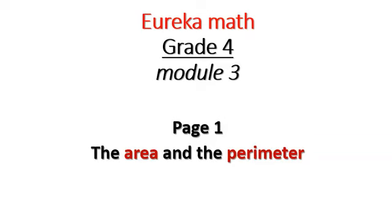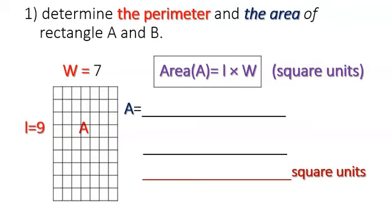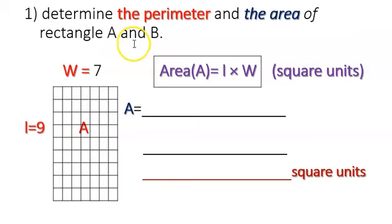Eureka Math, Grade 4, Module 3, Page 1 — the area and the perimeter. Question 1: determine the perimeter and the area of rectangle A and B.